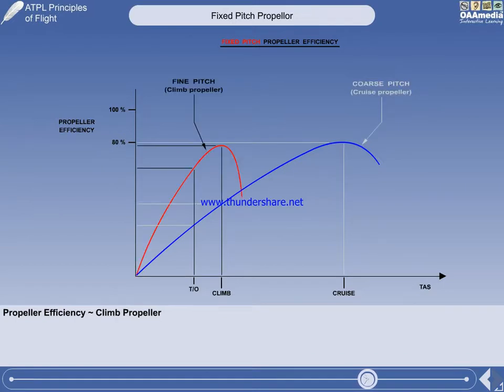In comparison, a fixed-pitch climb propeller gives maximum efficiency at low speed, but unfortunately is totally unsuitable for flight at a sensible cruising speed.